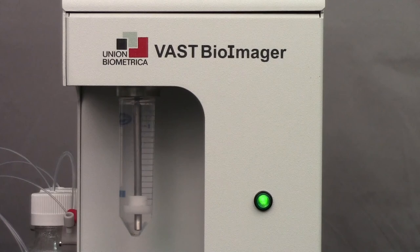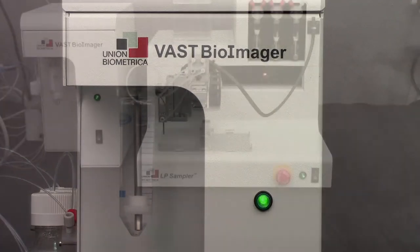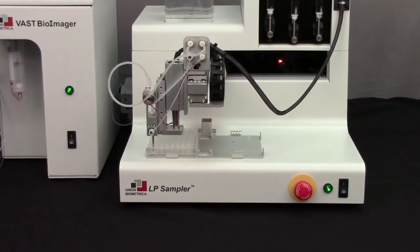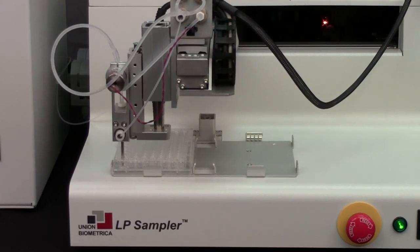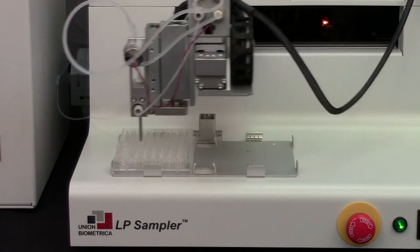Larvae can be gently loaded into VAST either from the 50 ml stirred sample cup or alternatively, the optional LP sampler can be added to the system to aspirate larvae from multi-well plates and deliver them one at a time to VAST for imaging.